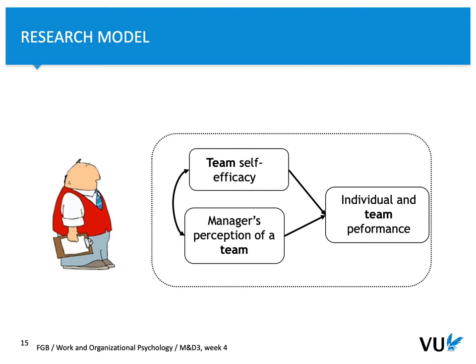Returning to the model: individual performance can be predicted based on at least two variables — team self-efficacy and manager's perception of a team. You measure individual self-efficacy, aggregate that to the team level, and take into account how individual managers perceive specific teams and to what extent this perception predicts individual performance. You can also measure team performance. In many cases, both individual and team performance can be evaluated.